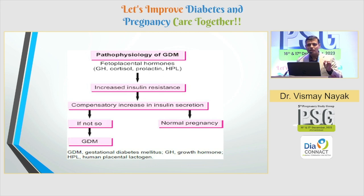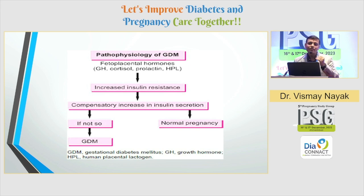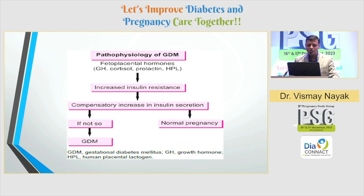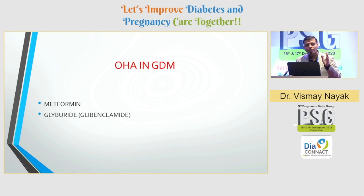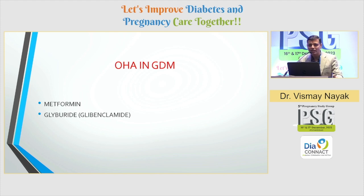As explained at the keynote session by Dr. Seshaya sir, the pathophysiology of GDM starts with insulin resistance. By giving insulin, are we treating the insulin resistance? No. So do we have something that can target insulin resistance? Yes — we have two OHAs proved to be safe and effective in GDM: one is metformin, the other is glyburide or glibenclamide.